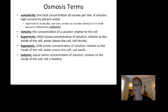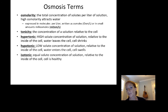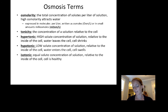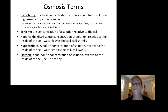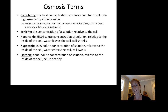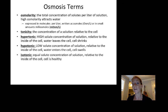A couple of terms for osmosis. Osmolarity is the total concentration of solutes per liter of solution — we never measure the amount of water; we measure the amount of solutes. High osmolarity means a high number of solutes, and high osmolarity will attract water or pull water in. We express osmolarity in molecules per liter, or in small amounts, milliosmoles per liter.